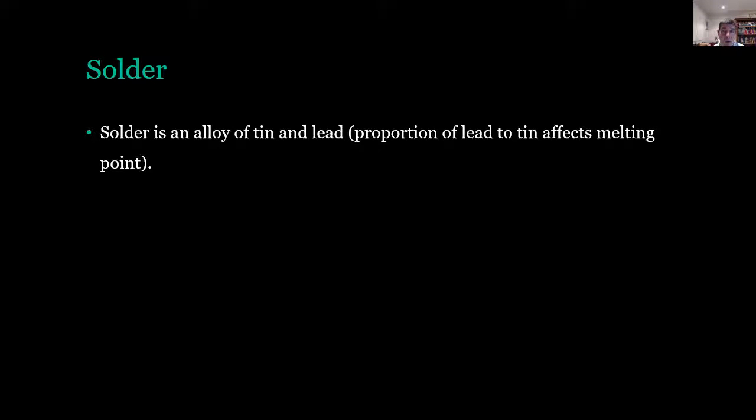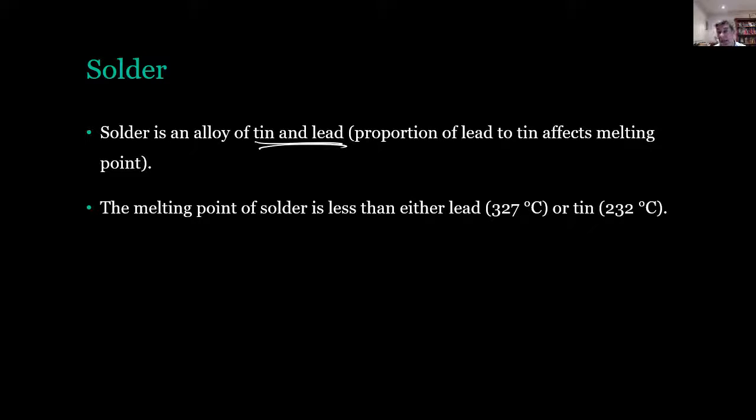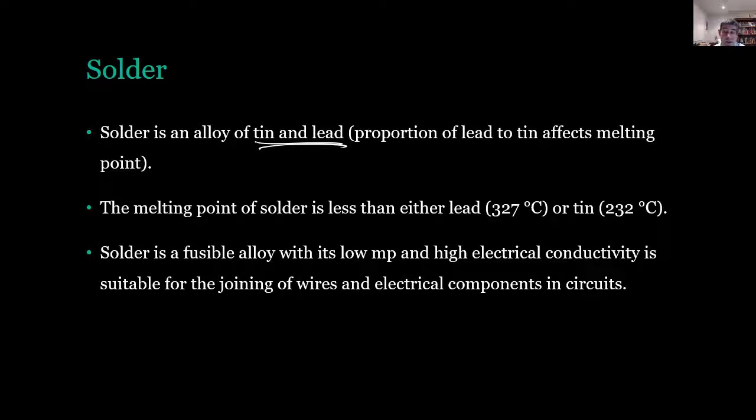And finally solder. Solder is another alloy that we're going to investigate in class. It's an alloy of tin and lead and the proportion of lead to tin can actually affect the melting point of the solder. The melting point of solder is less than either lead or tin, so we need to heat those up to fairly high temperatures in order to get them to mix together. But then once they have formed the alloy, it then melts at a much lower temperature. And that makes it a nice, easy material to work with for fusing different types of other metals together, particularly the joining of wires.